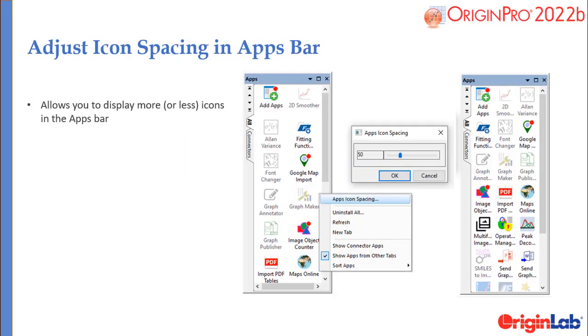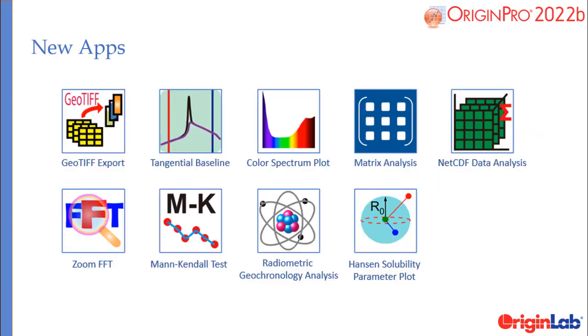Organize the app gallery with a new icon spacing option. This allows the number of apps displayed to be customizable. These are the apps available for use in 2022b.